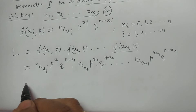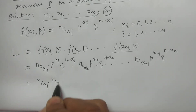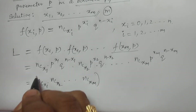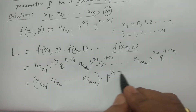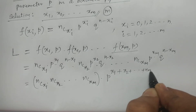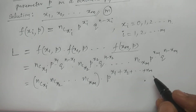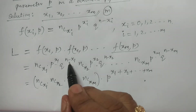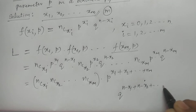Simplifying further: L = [nCx1 * nCx2 * ... * nCxm] * p^(x1+x2+...+xm) * q^((n-x1)+(n-x2)+...+(n-xm)).